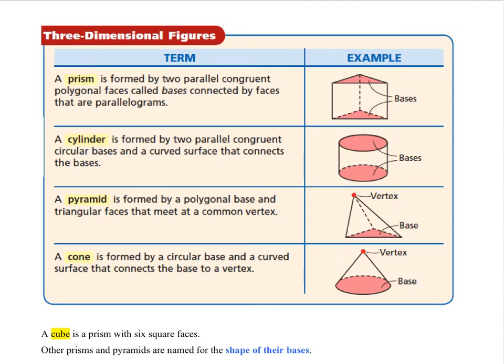We started learning about three-dimensional figures in elementary school and then again in middle school. Here in geometry we're going to extend our knowledge a little bit starting with this table that helps us distinguish between three-dimensional figures. So let's start with a prism. A prism is formed by two parallel congruent polygonal faces called bases. We can see in the figure we have two triangular bases that are parallel to one another.